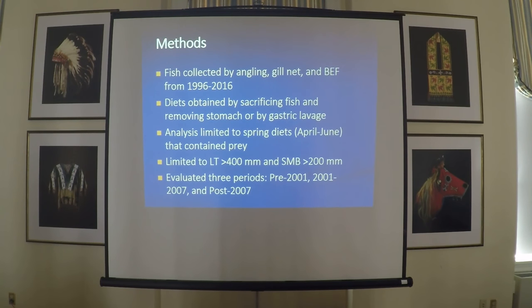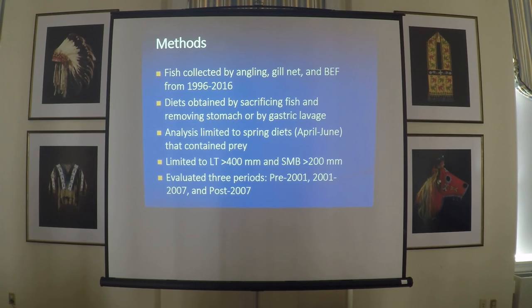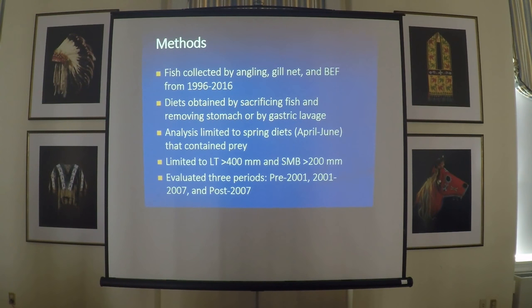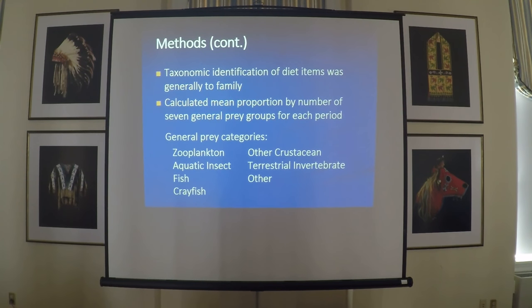We wanted to compare the diets of these two predators before and after the removal, so we looked at three different periods. Pre-2001 is pre-removal. 2001 to 2007 is a post-removal period corresponding to when rainbow smelts were present in the lake but not in appreciable numbers according to our electrofishing surveys. Post-2007 is another post-removal period when smelts had become a more major component of the fish community.